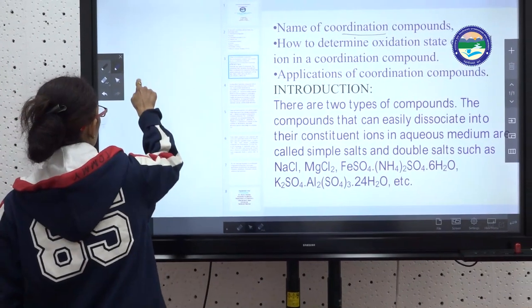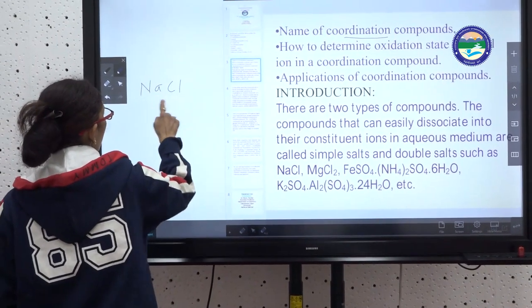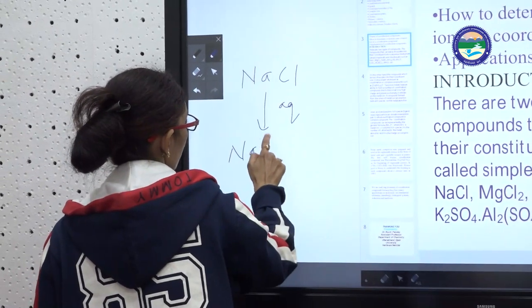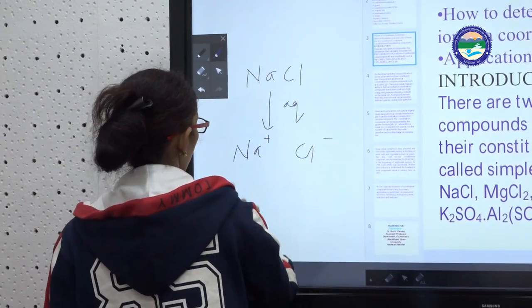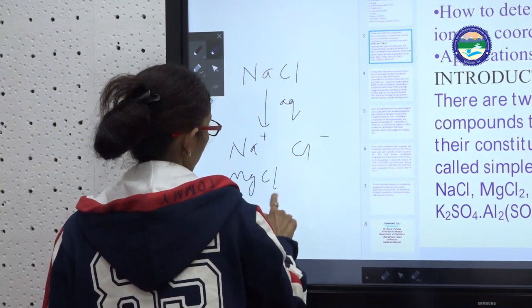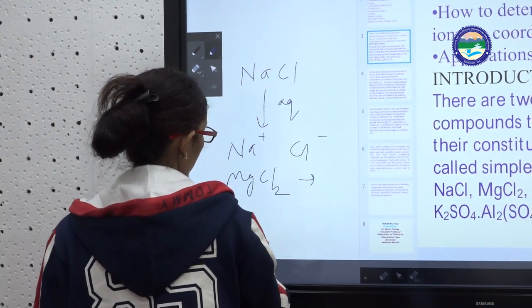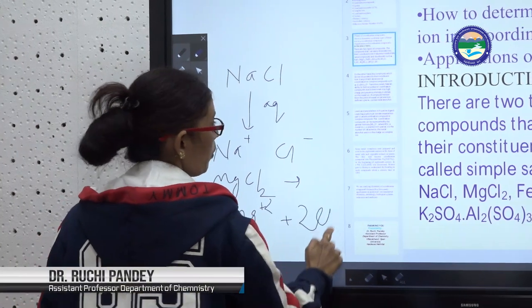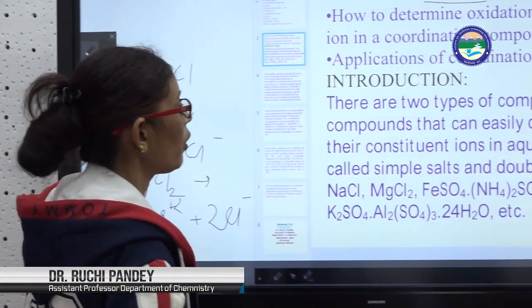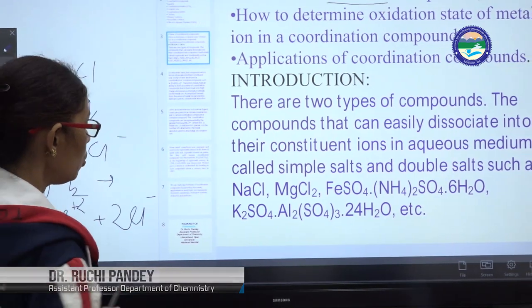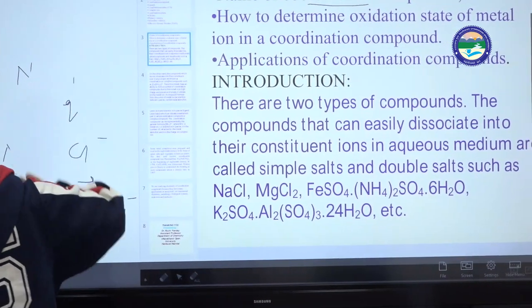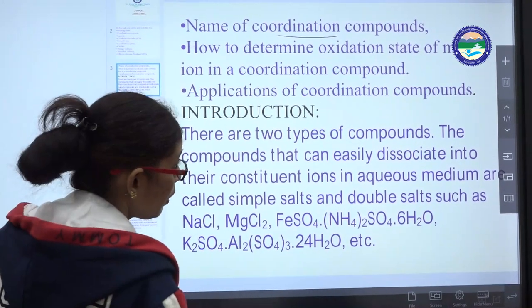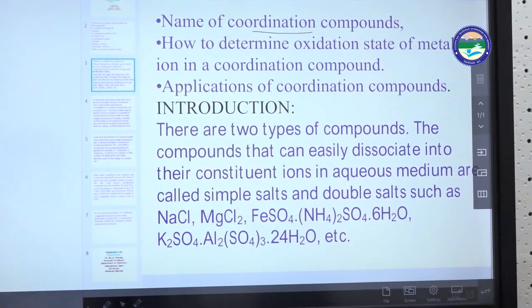For example, we take NaCl. NaCl in aqueous medium breaks into its ions — we call it a simple salt. Double salts are those that break into double constituent ions. That means the particles break apart as well.